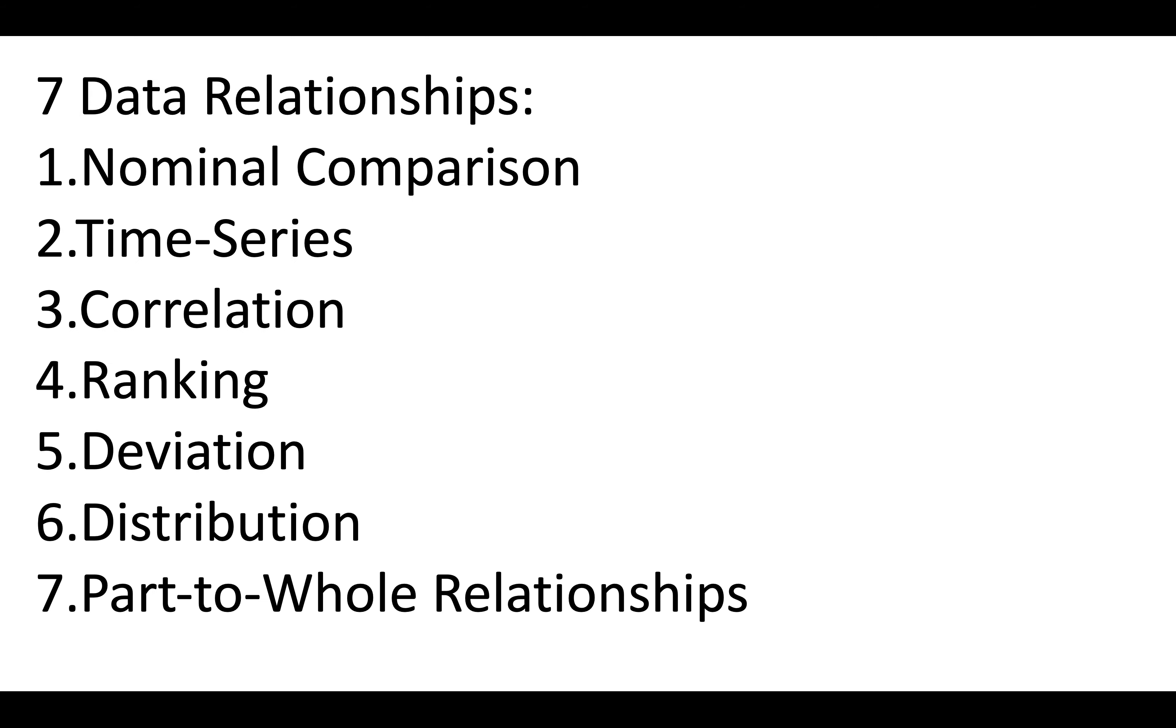There are seven main types: nominal comparison, time series, correlation, ranking, deviation, distribution, and part-to-whole relationships. I'll deal with them number one through seven.